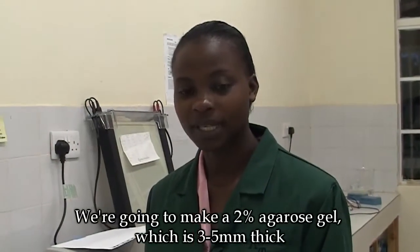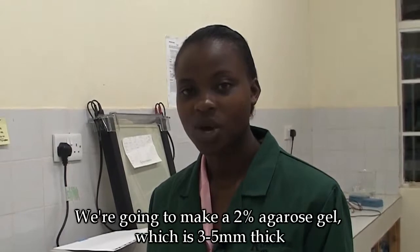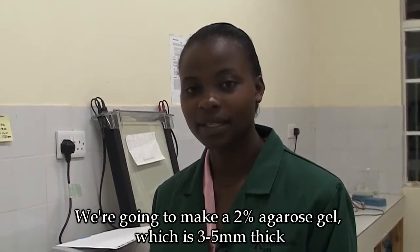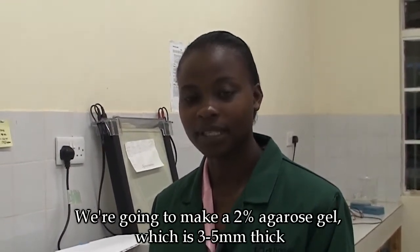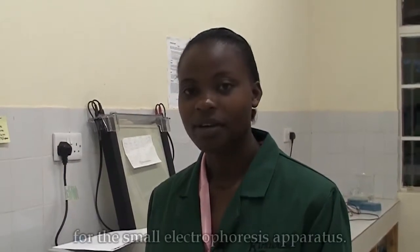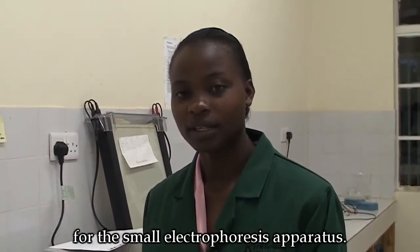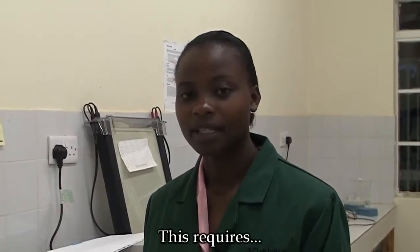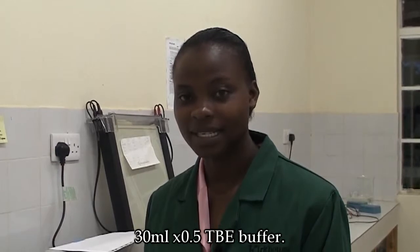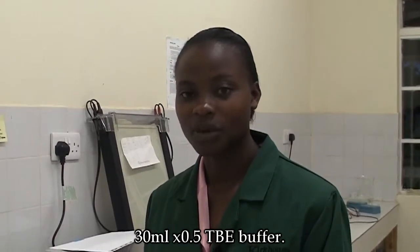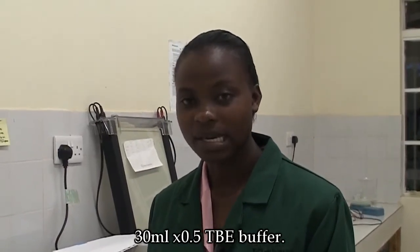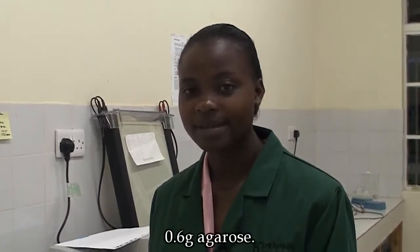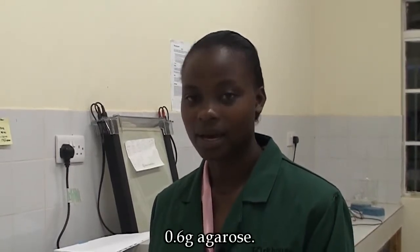We are going to make 2% agarose gel, which is 3 to 5 millimeters thick for the small electrophoresis apparatus. That requires 30 milliliters of 0.5X TBE and 0.6 grams agarose.